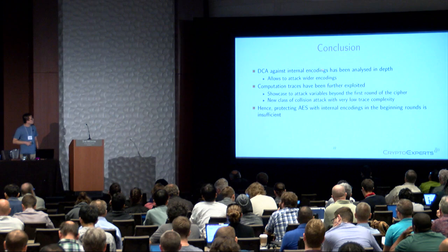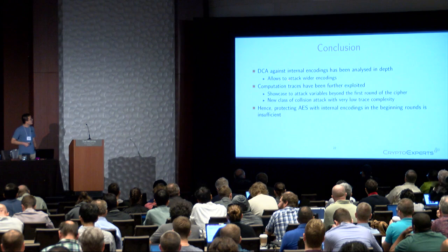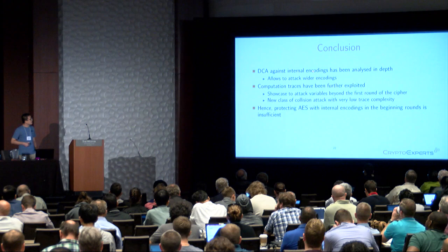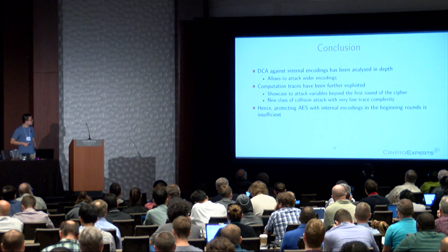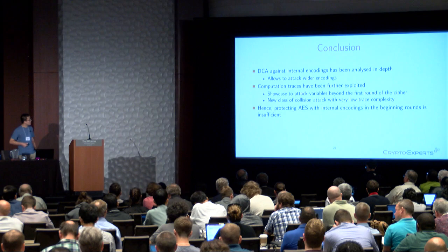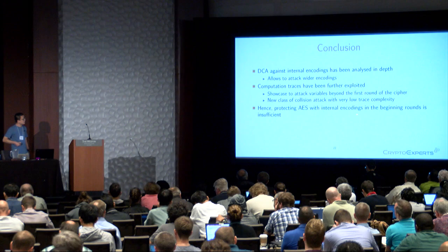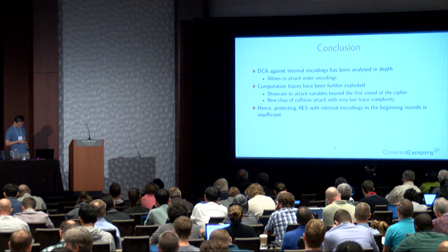To conclude: in this work we analyzed differential computation analysis in depth, allowing attacks targeting wider encodings instead of only 4-bit encodings and enabling attacks on variables in inner rounds. We also further exploited computational traces using the clash attack to break internal encoding. This means protecting a cipher with internal encoding only in the outer rounds is not sufficient. Thank you.